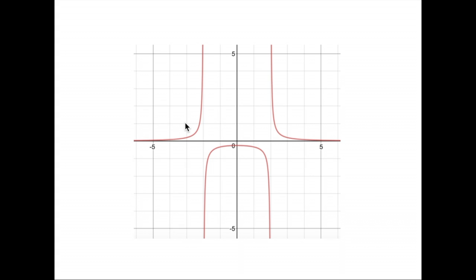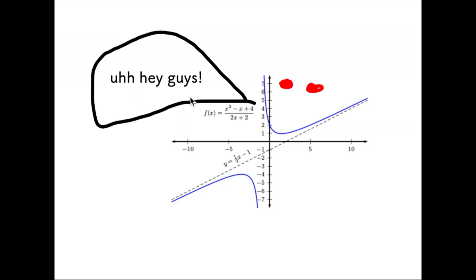So you're learning about rational functions, and the more you study them, the weirder they get. I'm looking at you, oblique asymptotes.